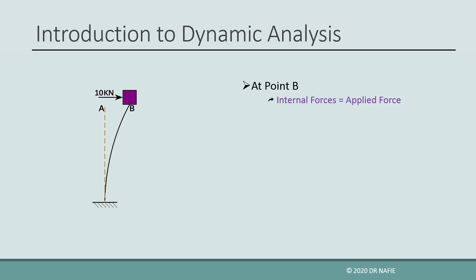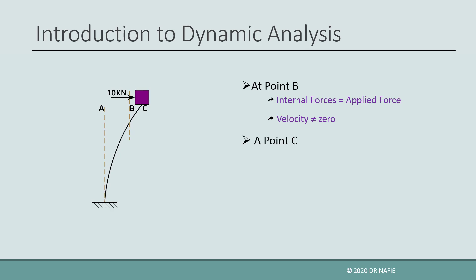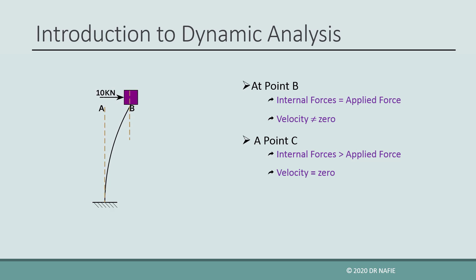However, due to the sudden application of the force, the velocity will not be zero when the mass reaches point B, and the mass will move further until it reaches point C. The additional internal forces generated due to the additional deflection from point B to point C will decrease the velocity of the mass until it becomes zero at point C and it stops. At point C, the internal forces will be larger than the external applied force, and this will cause the mass to move back towards point B.